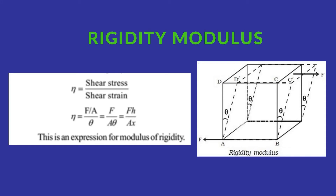Rigidity modulus is defined as the ratio between the tangential stress to shearing strain within the elastic limits. Consider a solid cube whose lower face is fixed. A tangential force F is applied over the upper face, and as a result the cube gets deformed to a rhombus shape, making an angle theta. The tangential stress is equal to F by A. So the rigidity modulus N is equal to tangential stress divided by shearing strain, giving N equal to F divided by (A times theta). The unit is Newton per meter squared. The rigidity modulus describes the change in angle of the body.